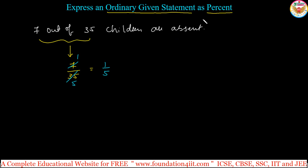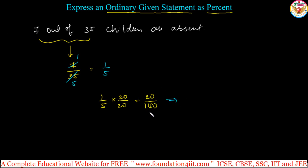To convert this as a percent, we should make the denominator equal to 100. The denominator is 5, which is not 100. So take 1 by 5 and multiply by 20 — 5 into 20 is 100. Apply the same to the numerator, giving 20 by 100. Whenever the denominator is 100, that is exactly 20 out of 100, which is 20 percent. So 20 percent of children are absent.